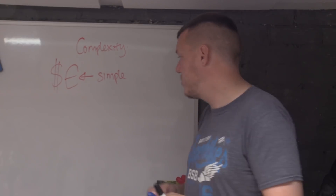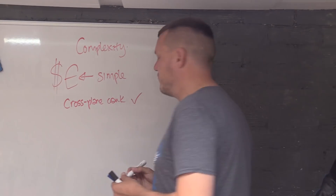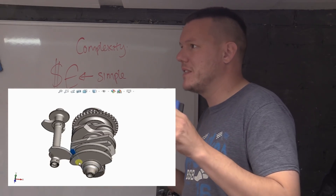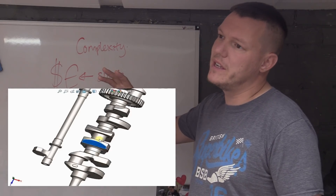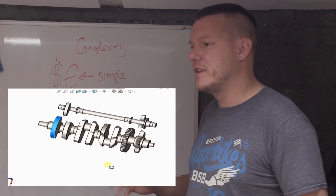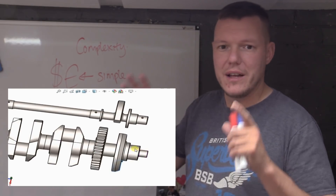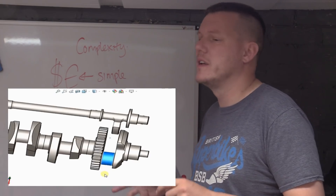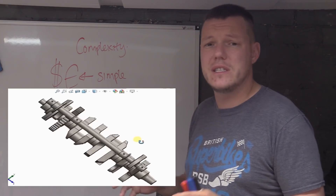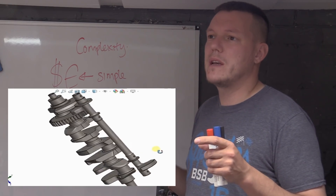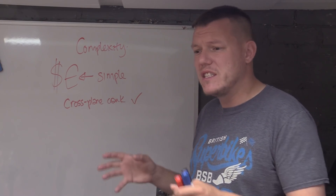Let me explain something about parts count and complexity using the R1 cross-plane crankshaft. That crankshaft is highly complex. But it is one part — apart from the pressed-on balancer shaft gear, the crankshaft is just one complete part. Your parts count there is one — you can't get any lower than that. Yet it is a severely complicated crankshaft.